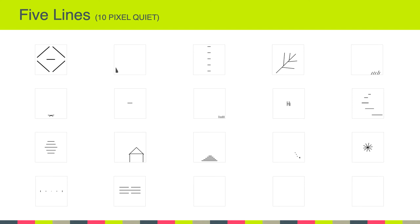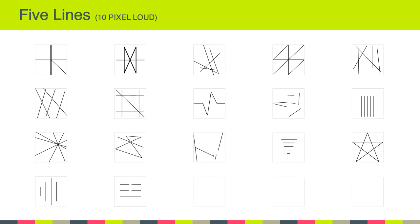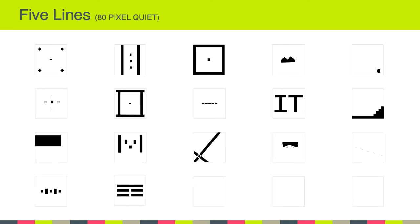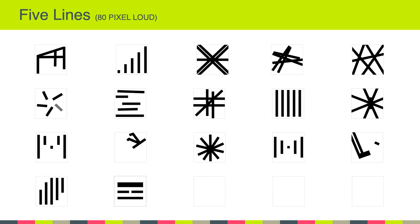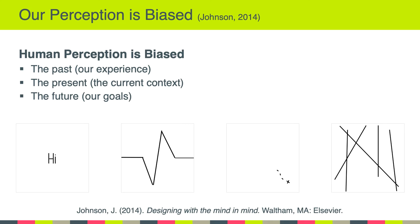Now let's take a minute to look at some of your designs. Here we can see the 10 pixel quiet designs, and here we have the 10 pixel loud designs. Here is the 80 pixel quiet designs. I wanted to connect this five lines assignment to what we read about in the Johnson article about human perception being biased. I've highlighted a couple of your designs here to connect to our inherent biases, and this is also going to be a nice segue into talking about this week's readings with the Callo piece and some concepts about visual culture.